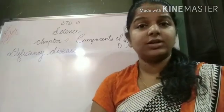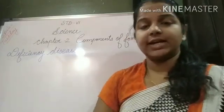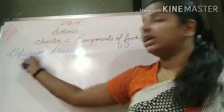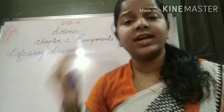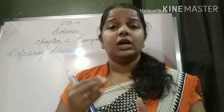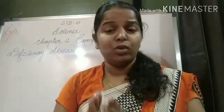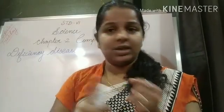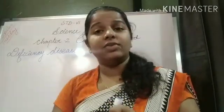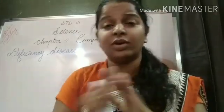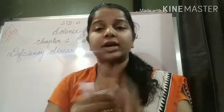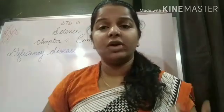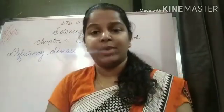We have discussed about the minerals and now we are going to discuss about deficiency. Deficiency occurs in two conditions: first, if a person is continuously getting food but that food does not have any proper nutrients. Second, if the person is not getting food at all. In both conditions, the nutrients required by the body are not obtained from food.